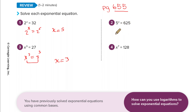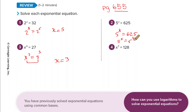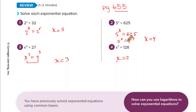Next: 5 to some power equals 625. 5 times 5 is 25, times 5 is 125, times 5 — that must be a 4. So 5 to the x equals 5 to the 4th power, therefore x equals 4. And lastly, some number to the 7th power equals 128 — that's got to be a tiny number. That's all review using common base.